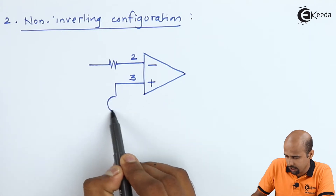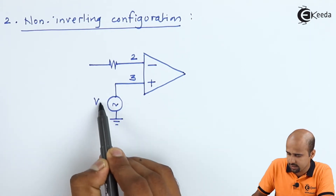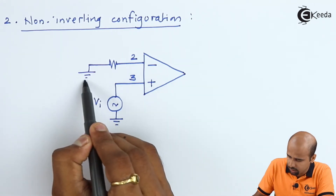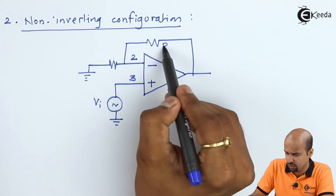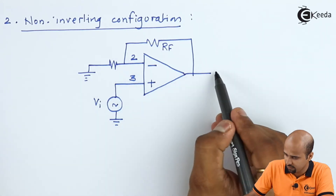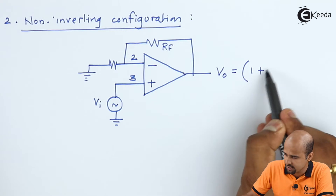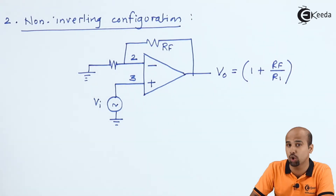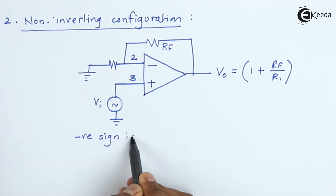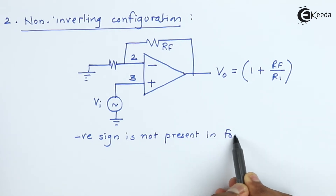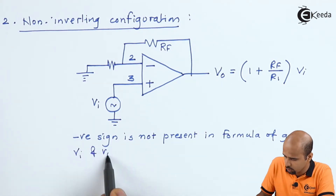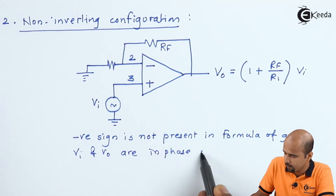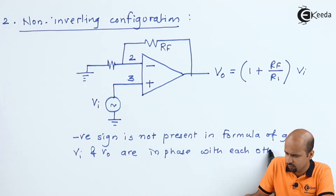Here the second pin is the inverting terminal and the third pin is the non-inverting terminal. We apply the input vi to the non-inverting terminal and keep the inverting terminal connected to ground through a resistor, while also applying negative feedback. This completes the closed-loop non-inverting amplifier configuration, where the output Vo equals Vi multiplied by (1 plus Rf upon R1). There is no negative sign, which indicates that input and output are in phase with each other.